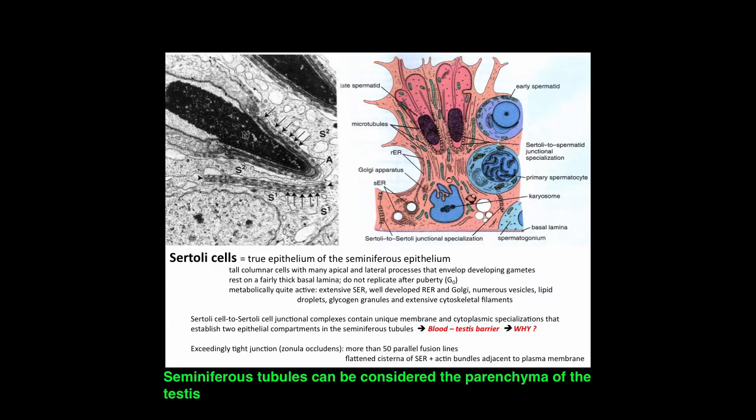The Sertoli cells are epithelial cells and they are the true epithelium of the seminiferous tubules. They're tall columnar cells with many apical and lateral processes that envelop the developing gametes. The Sertoli cells rest on a fairly thick basal lamina and do not replicate after puberty, so they're in a G-zero phase.